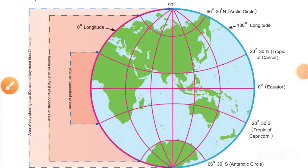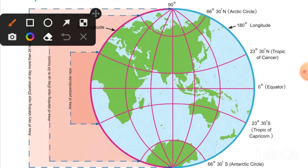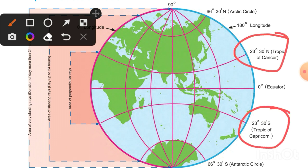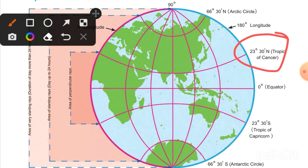Welcome to part three of this lesson. You can see the Tropic of Cancer and Tropic of Capricorn written on this globe. Both share the figure 23 degrees 30 minutes — the one towards the north is the Tropic of Cancer at 23°30' north, and the one towards the south is the Tropic of Capricorn at 23°30' south. This area receives perpendicular, meaning straight, sun rays, and that's why it is hot here.